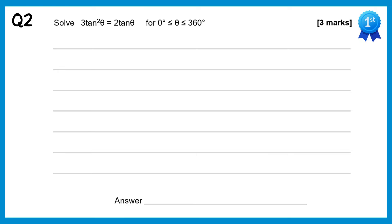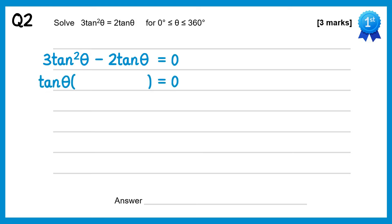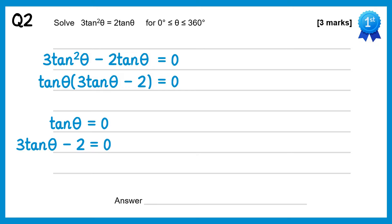For this question we'll subtract 2tanθ from both sides, so we get 3tan²θ minus 2tanθ equals 0. Now we factorise out a tanθ; inside the bracket we'd need 3tanθ take away 2. So either tanθ equals 0, or 3tanθ take away 2 equals 0. The second one rearranges to give tanθ equals 2/3.